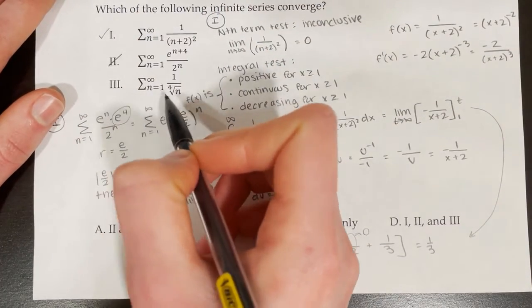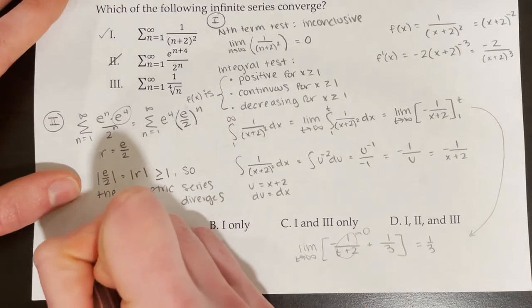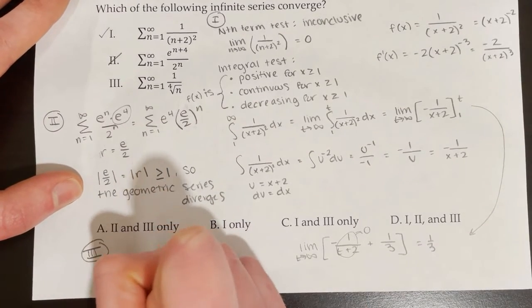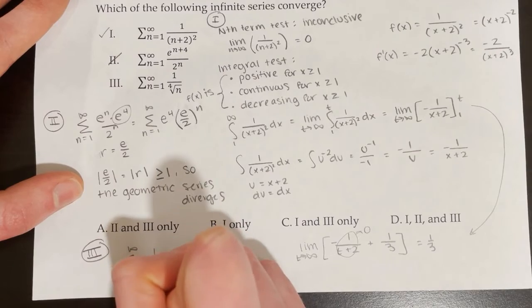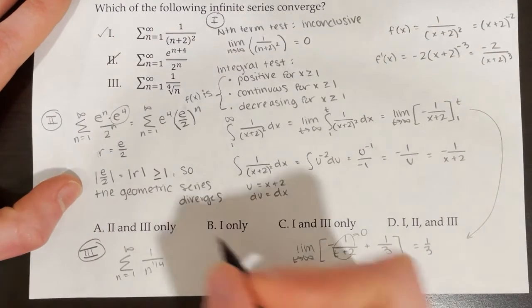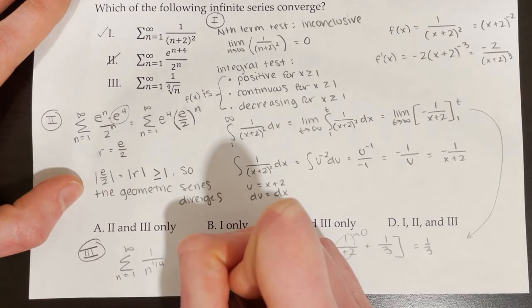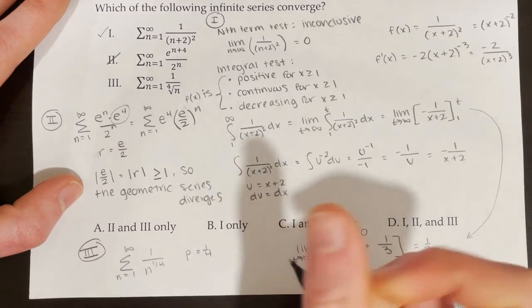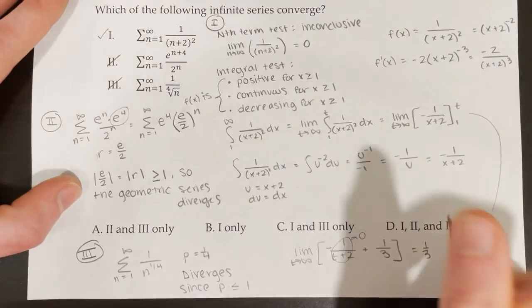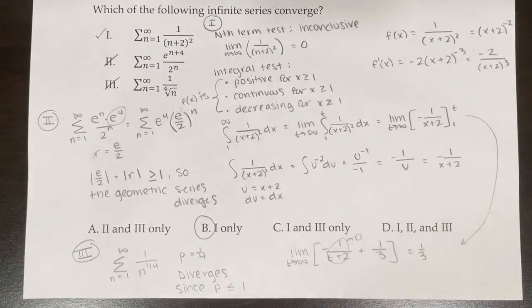For number 3, we have the series from n equals 1 to infinity of 1 over the fourth root of n, which I rewrite as 1 over n to the power of 1 fourth. This is a p-series with p equal to 1 fourth. Since 1 fourth is less than or equal to 1, this series diverges. The only series that converges is number 1, so B is the correct answer.